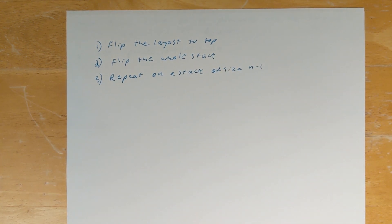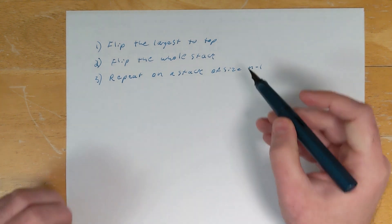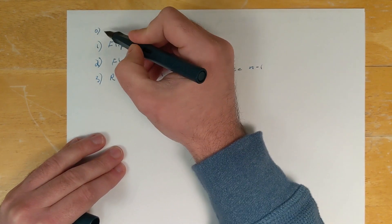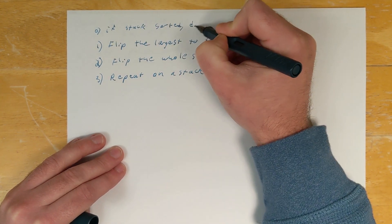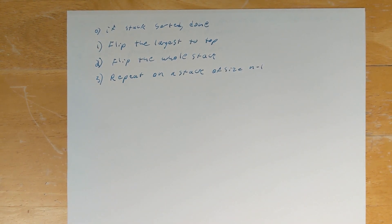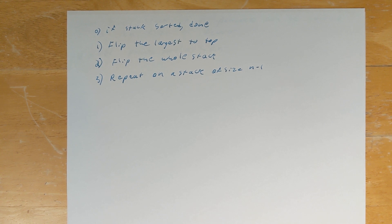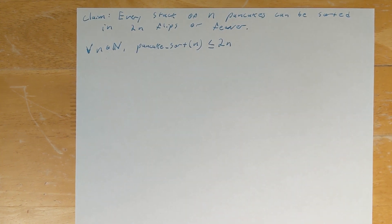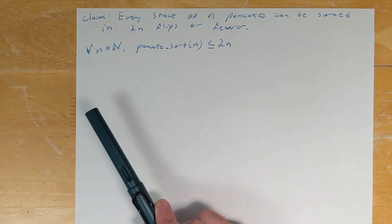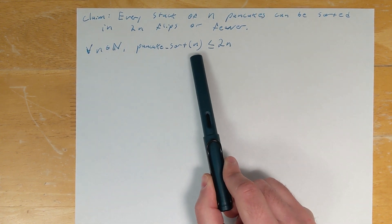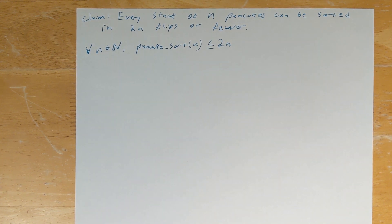This definition needs a step zero: if the stack is already sorted, you're done. That gives us a complete procedure for sorting a stack of n pancakes. We're going to use this procedure to demonstrate that every stack of pancakes can be sorted in no more than 2n flips — that is, for every natural number n, if I have a stack of n pancakes, the number of flips required is going to be less than or equal to 2n.